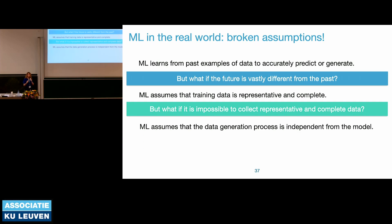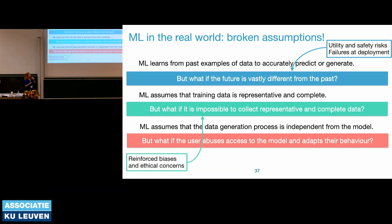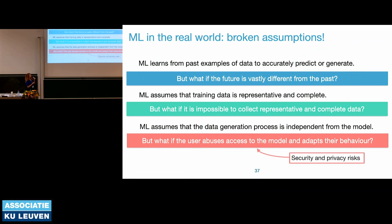The third base assumption is that the data generation process is independent from the model. Again, this assumption breaks in security because we have active adversaries trying to undermine the model — the adversary can impact the data generation process, making it no longer independent. To summarize: the first problem — future vastly different from the past — is a utility and safety problem; things you relied on stop working and you don't even need an attacker. The second reflects biases reinforced by automating biased representations. And thirdly, privacy and security risks — this is where most research on machine learning as a target is based.